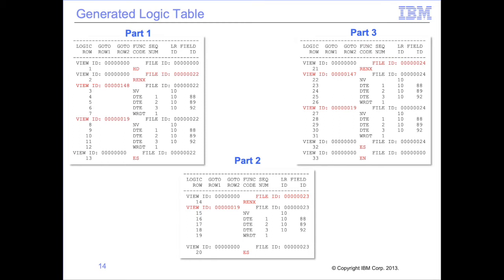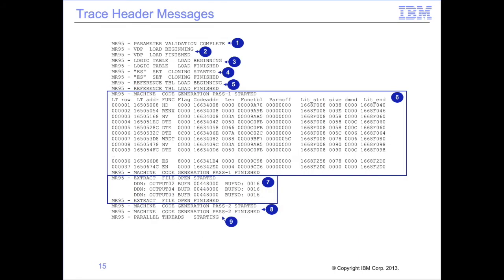Next, we'll look at the initial messages for the logic table trace. When trace is activated, GBBMR95 prints certain messages during initialization before parallel processing begins. MR95 first validates any input parameters listed in the JCL for proper keywords and values. Second, MR95 loads the VDP file from disk to memory. Third, MR95 loads the logic table from disk to memory. Fourth, MR95 clones ES sets to create threads, discussed more fully on the next slide.